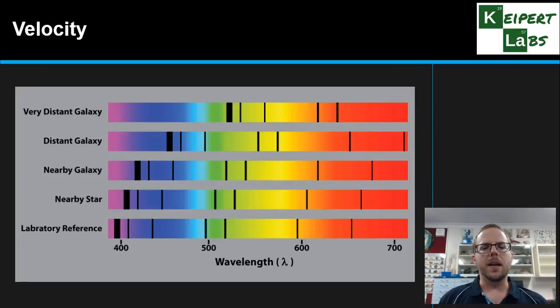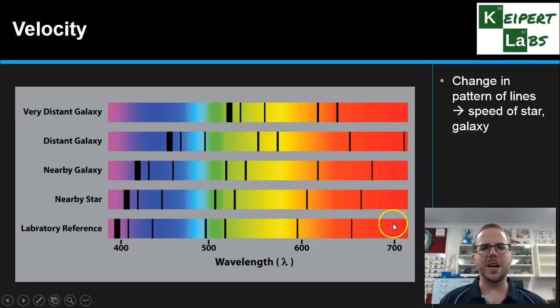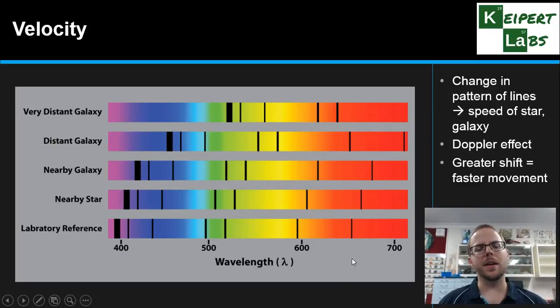The last thing that we're able to tell about a star is its velocity. So depending on how fast it's traveling and where it is, what we see is that the pattern of lines emitted from the star changes. We say that it shifts. This is due to something called the Doppler effect. And so you'll notice that as we go from this bottom example all the way up, we're getting a shift further and further towards the right or the red end of the spectrum here. What that tells us is that when we analyze the pattern of lines, the greater the shift is, the faster that star or galaxy is moving. So we can look at that in more detail to work out how fast that's traveling. We'll go over exactly why that is in a future video.